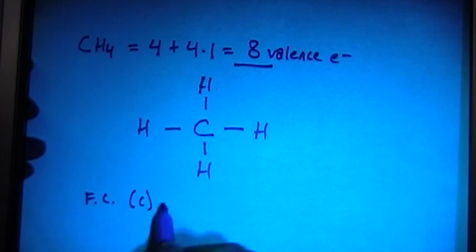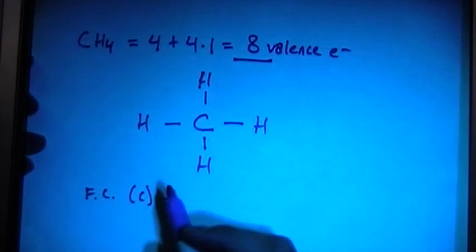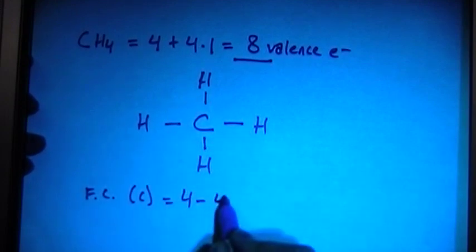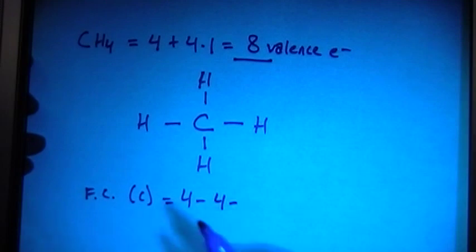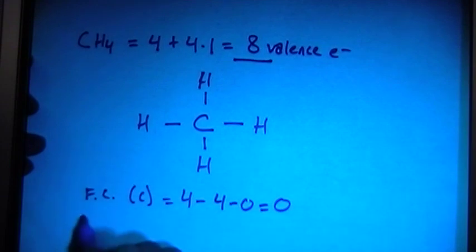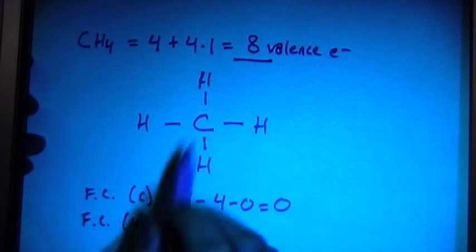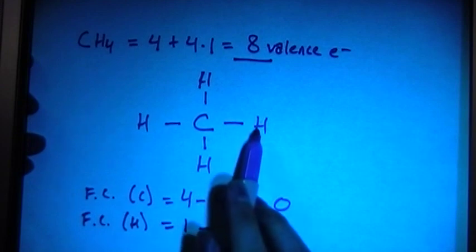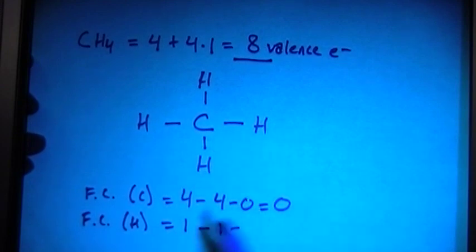The formal charge on the carbon — remember, formal charge is number of valence electrons brought in, which is four, minus the number of bonds around it, one, two, three, four, minus the number of nonbonding electrons, which is zero — and that gives us zero. The formal charge for the hydrogens: they're all going to be the same. Number of valence electrons brought in, one, minus number of bonds for each hydrogen, one, minus number of nonbonding electrons, zero — that's also zero.